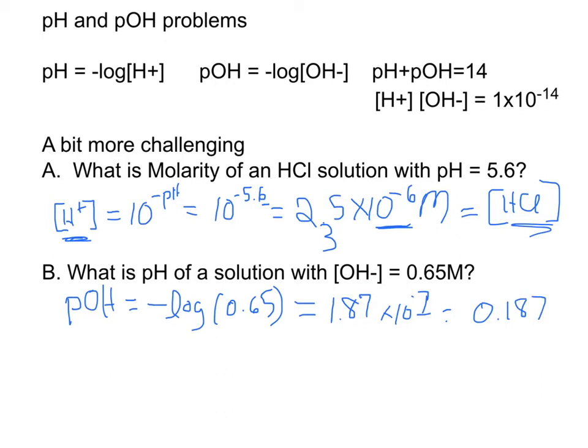We know the pOH. What we're asked to find is the pH. Let's remember that the sum of the pH and the pOH is always 14. So that means the pH is going to be equal to 14 minus the 0.187. 14 minus 0.187, that's 13.8. This would be a really basic solution.